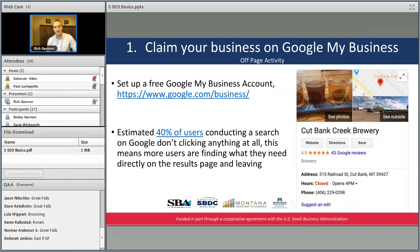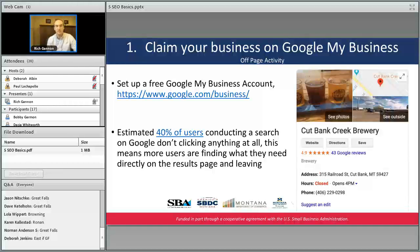The first thing we're going to cover is an off-page activity — and while it doesn't directly link to your website, it's an online reputation management issue that can affect your search engine rankings. That is to claim your business on a Google My Business profile. If you don't already have a Google My Business account set up, there's the address of how to do it.